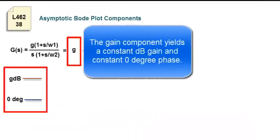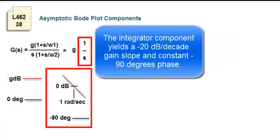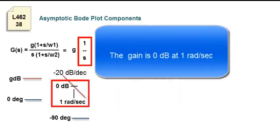The gain component yields a constant dB gain and constant zero degrees phase. The integrator component yields a negative 20 dB per decade gain slope and constant negative 90 degrees phase. The gain is zero dB at one radian per second.